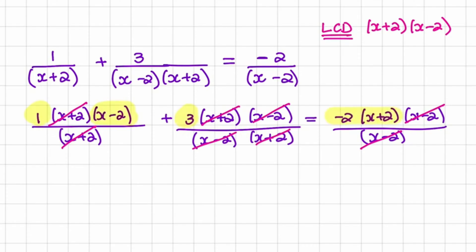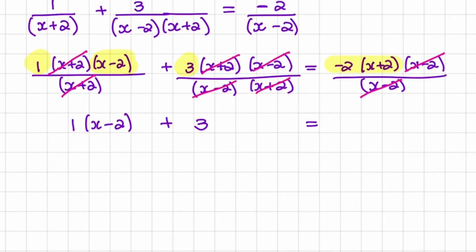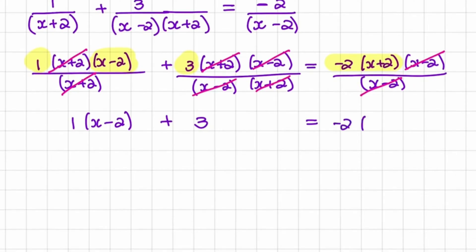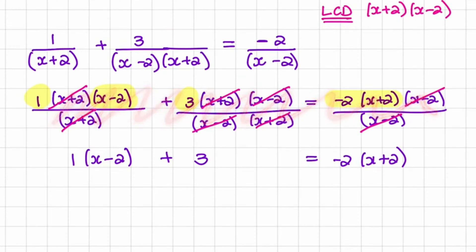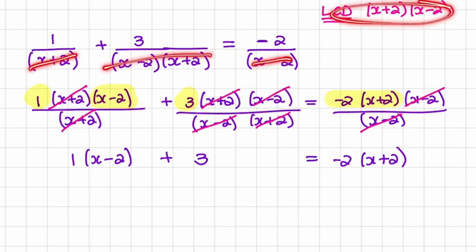It might be helpful to use a highlighter so you can see what is left. So in our first term, we're left with 1 multiplied by x minus 2. In our second term, we only have 3. And on the right-hand side, we have negative 2 times x plus 2. As you get used to multiplying with the LCD, you would actually start skipping this step because you can already see which terms cancel out by inspection.